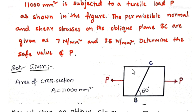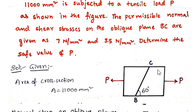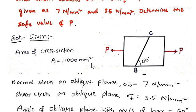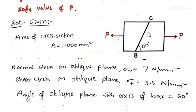A rectangular bar is given with axial load P applied, and we have to find the safe load value P such that on oblique section BC — inclined as shown in the figure — the normal stress should be 7 N/mm² and shear stress should be 3.5 N/mm². The given data: area of cross section is 11,000 mm², normal stress on oblique plane BC is 7 N/mm², and shear stress on this plane is 3.5 N/mm².